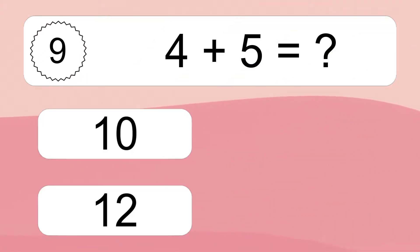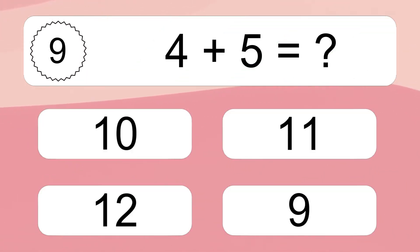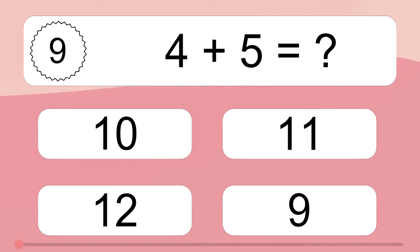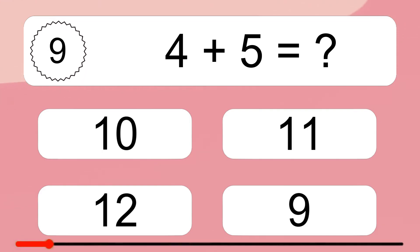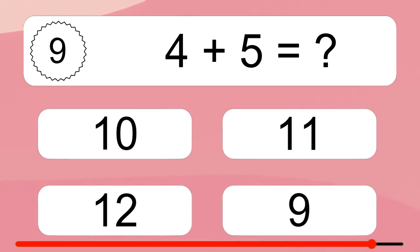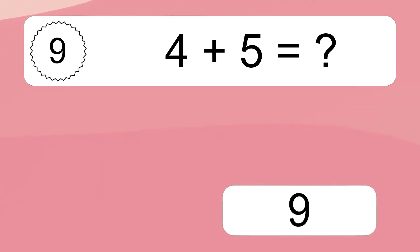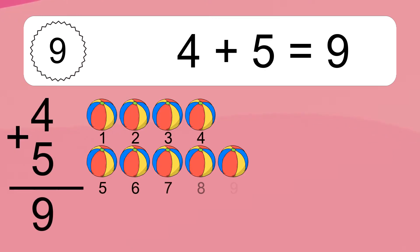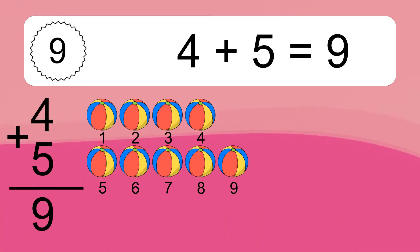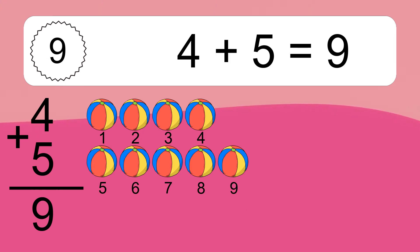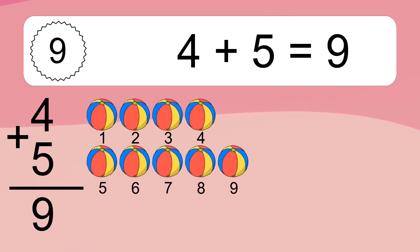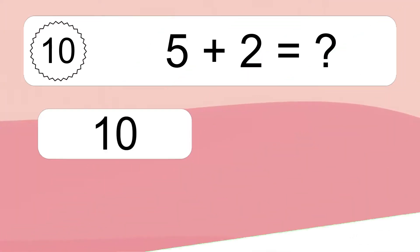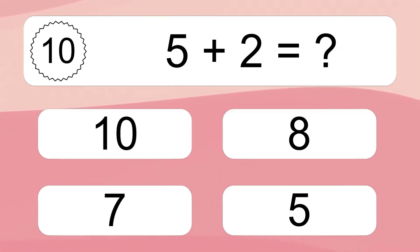4 plus 5 equals what? 4 plus 5 equals 9. Let's count it: 1, 2, 3, 4, 5, 6, 7, 8, 9.